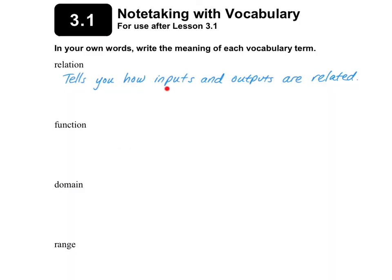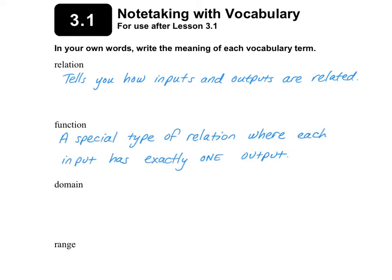A relation tells you how inputs and outputs are related. A function is a special type of relation where each input has exactly one output.